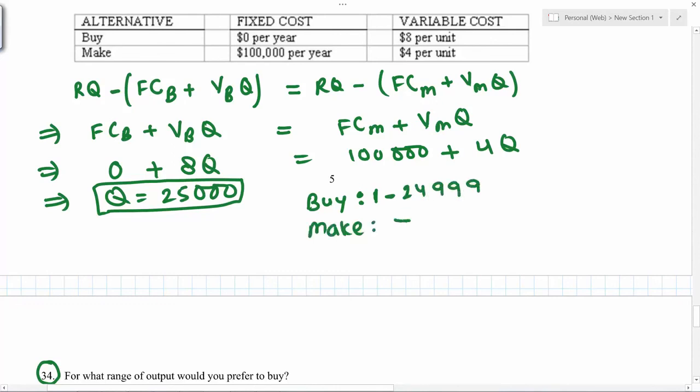And for make, it could be greater than or equal to 25,000. So the question was the output range when you prefer to buy. So that's the answer.